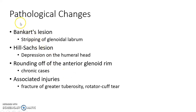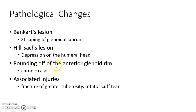Regarding pathological changes in shoulder dislocation, Bankart's lesion refers to stripping off of the glenoid labrum, while Hill-Sachs lesion refers to a depression on the humeral head. In chronic cases, there can also be rounding off of the anterior glenoid rim. Associated injuries include fracture of the greater tuberosity and rotator cuff tear.